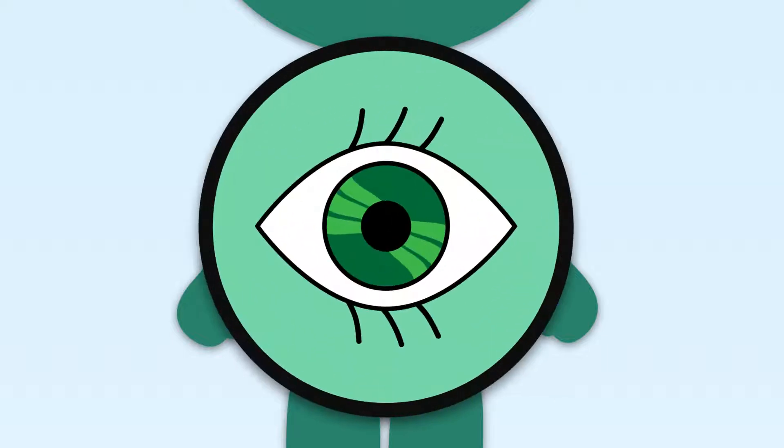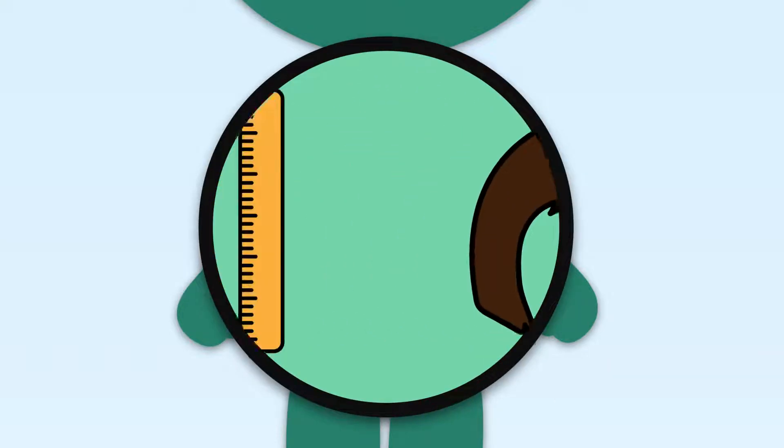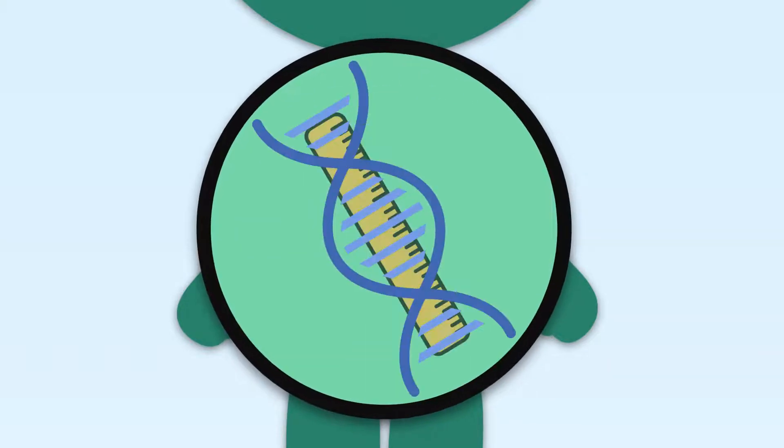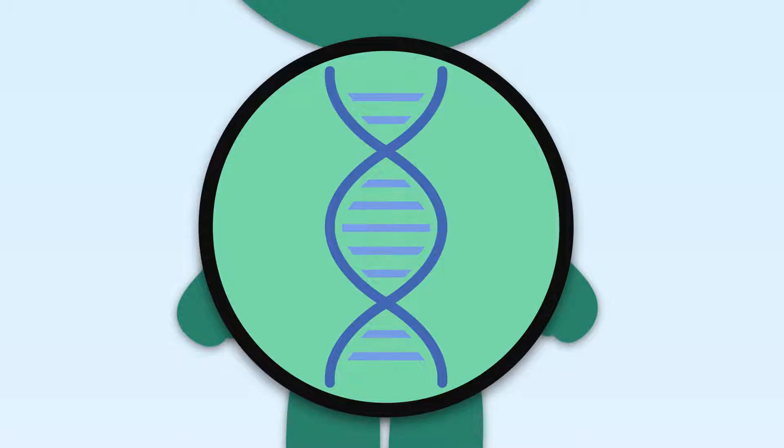Some genes determine your eye color, your hair color, or how tall you are. Other genes protect your body from developing cancer.